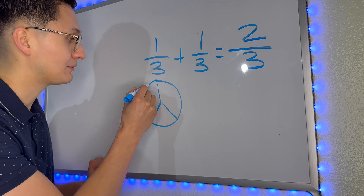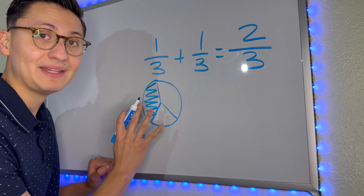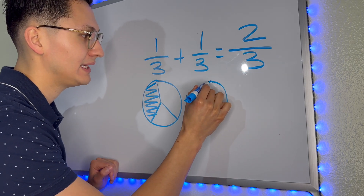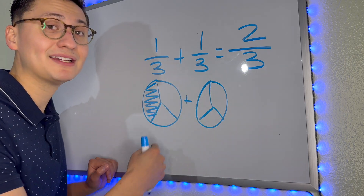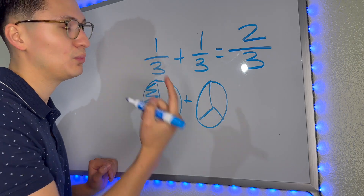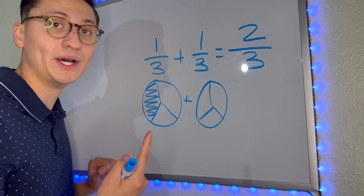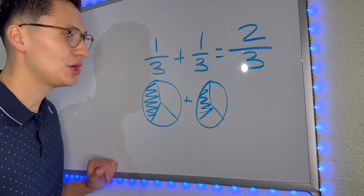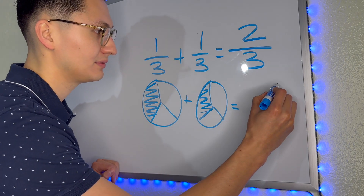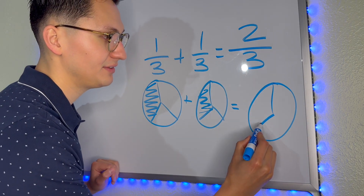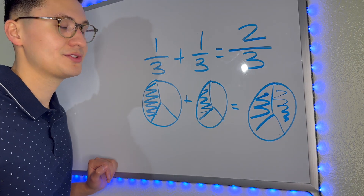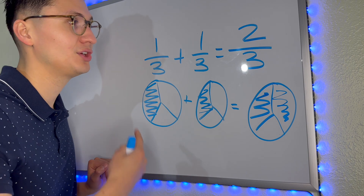The number on top, the numerator, tells us how many we have. So out of this pizza that's cut into three slices, we have one. We have another pizza — it's cut into three equal slices because the denominator, the number downstairs, tells us so. And how many slices do we have? We look at the numerator and it tells us one, so we shade in one. If we were to combine these pizzas, which is another way of saying add, we would have a pizza that's cut into three slices and we have two. One plus one is two. So one-third plus one-third equals two-thirds.